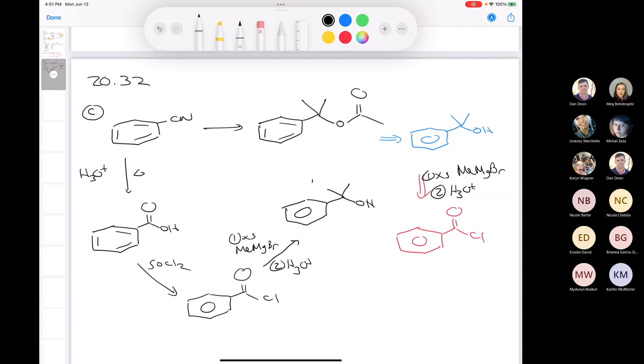So, one, the excess methylmagnesium bromide. Two would be H3O+. That would give me the desired alcohol. This guy. And then I just acetylate it. Let's pick acetyl chloride. Acetyl chloride and pyridine just for fun. Like that. And that's really the only way I can think to make that compound off the top of my head.